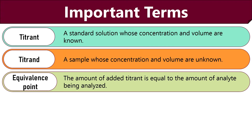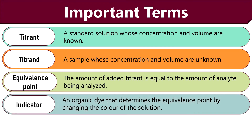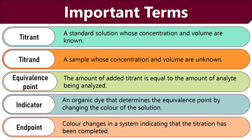Here in this stage, the titrant completely neutralizes the analyte solution. Then an indicator is an organic dye that is added to the analyte solution to determine the equivalence point. It changes the color of the sample when equilibrium is achieved. Then the endpoint is the stage when the color of the system fully changes, indicating that the titration has been completed.